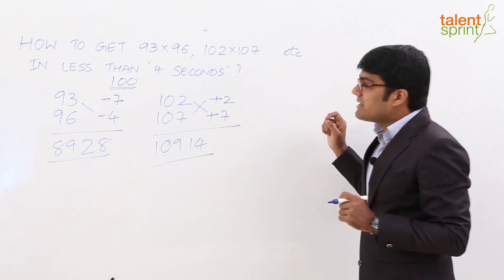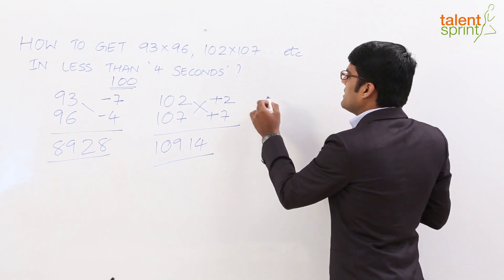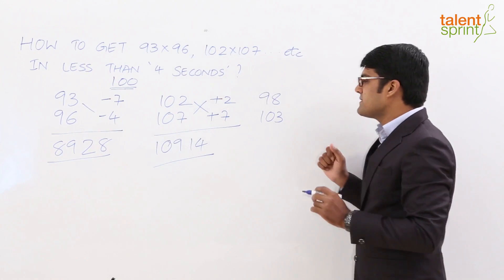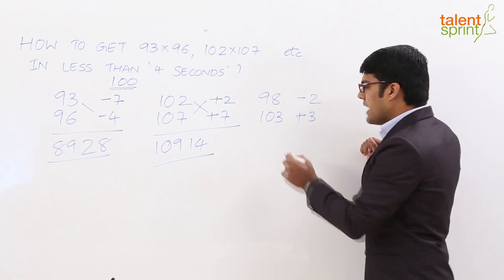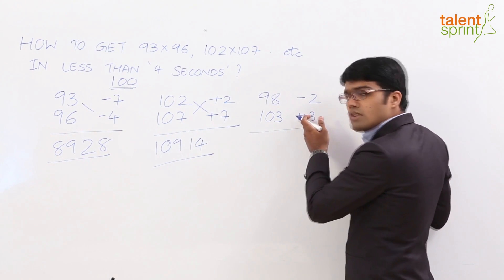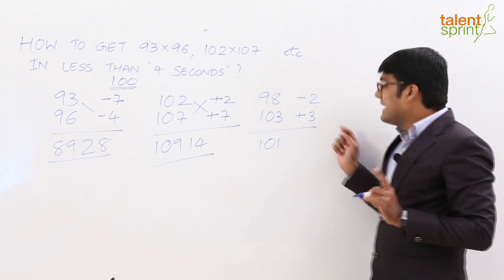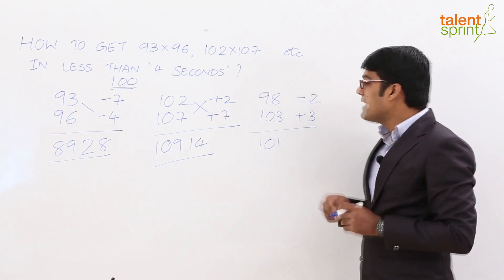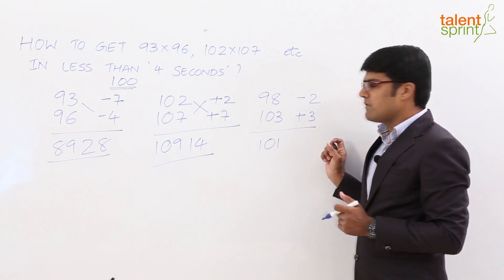Let us now take another example where we should consider one number less than 100 and the other to be more than 100. For example, let us say we need to multiply 98 with 103. Now what happens in this case? 98 is 2 less than 100 and 103 is 3 more than 100. So this is plus 3. Again, the first step remains the same. Either take the cross sum or the cross difference here. So 98 plus 3 is 101 or 103 minus 2 is again 101. So we have got 101 here. But then if you look at the product of these 2 values here, minus 2 into plus 3 is minus 6. Now what do we do? Minus 2 into plus 3 is minus 6. But how do we add that to 101 here? All we need to do is...